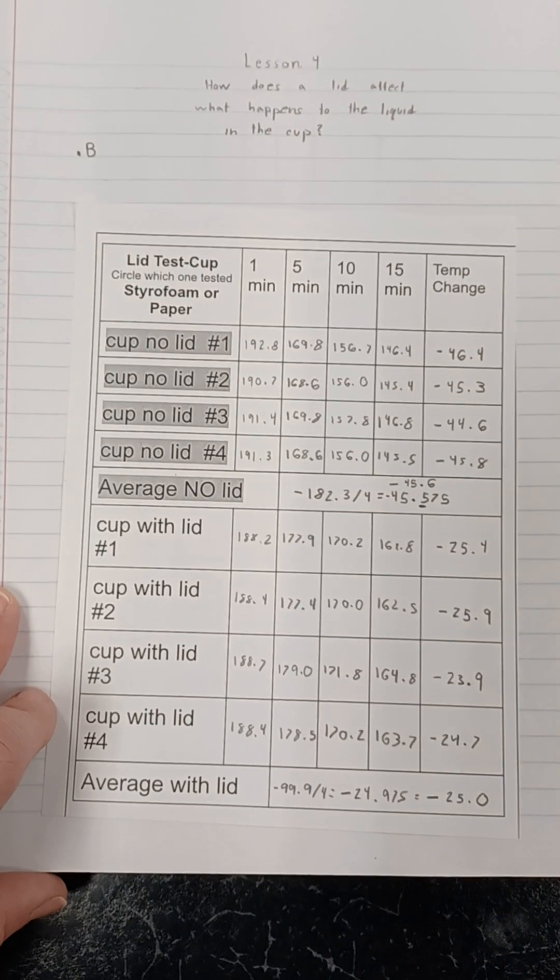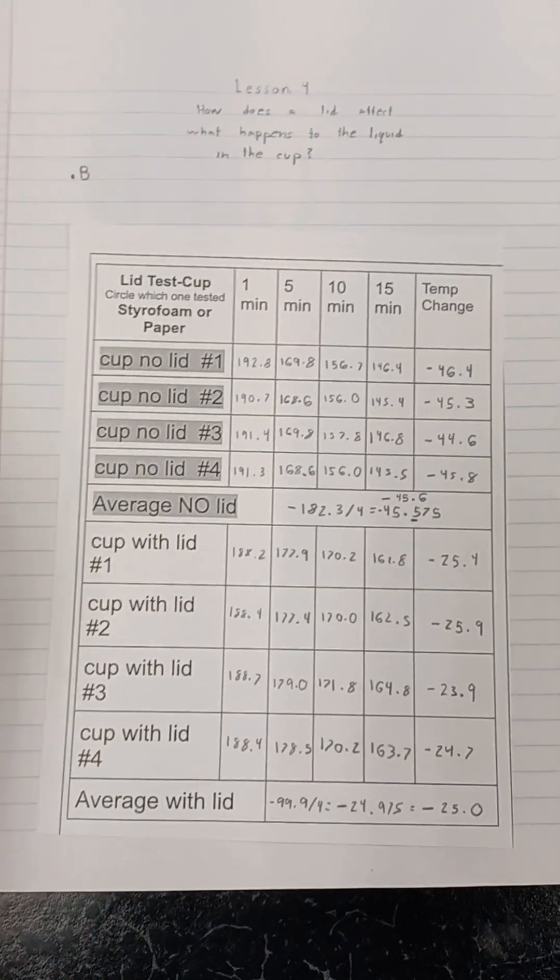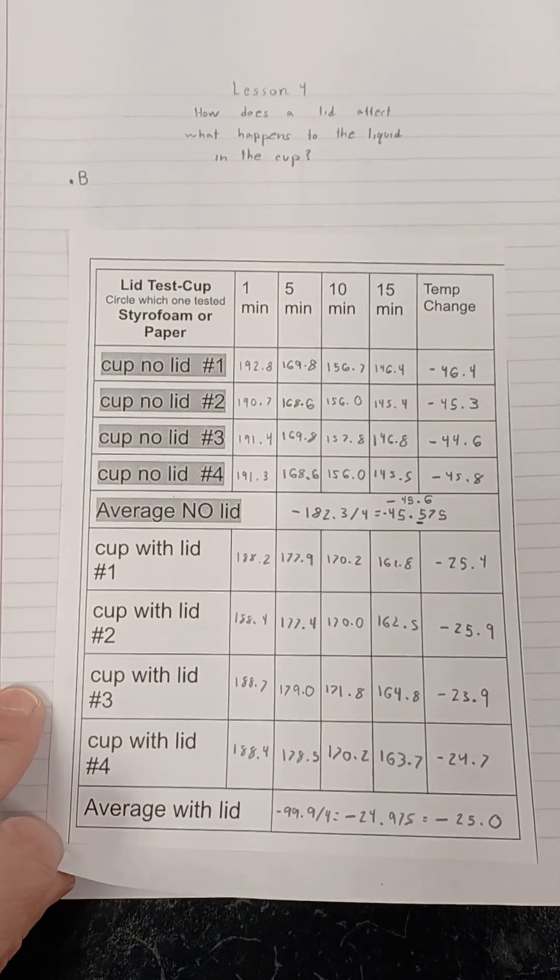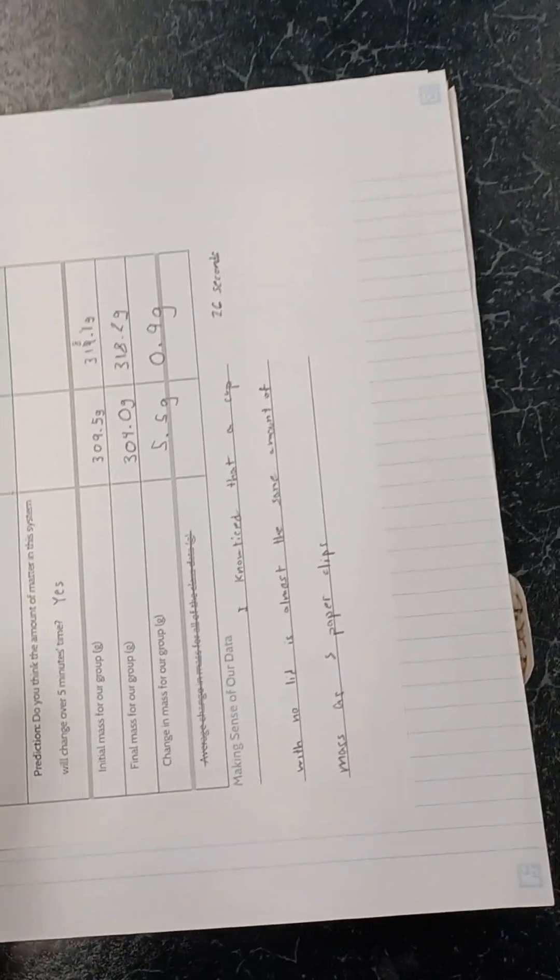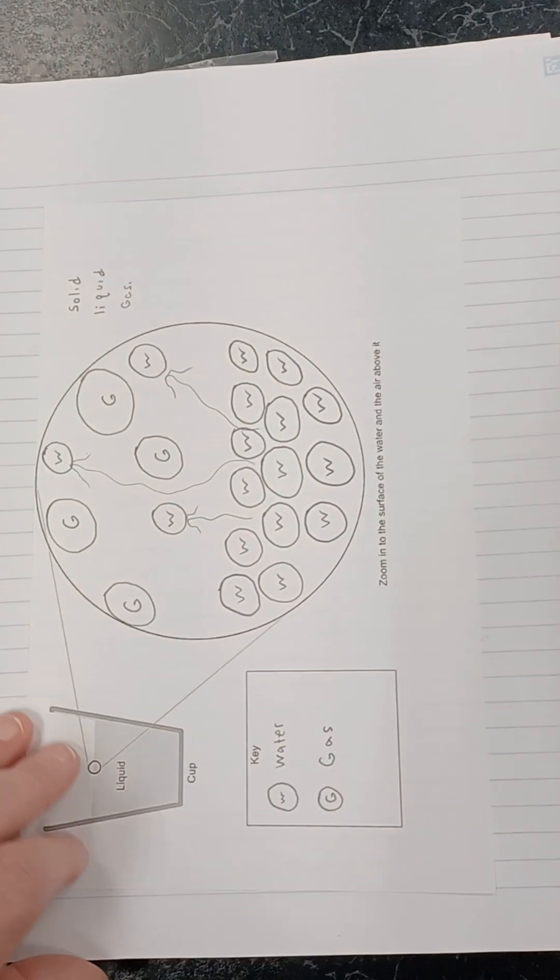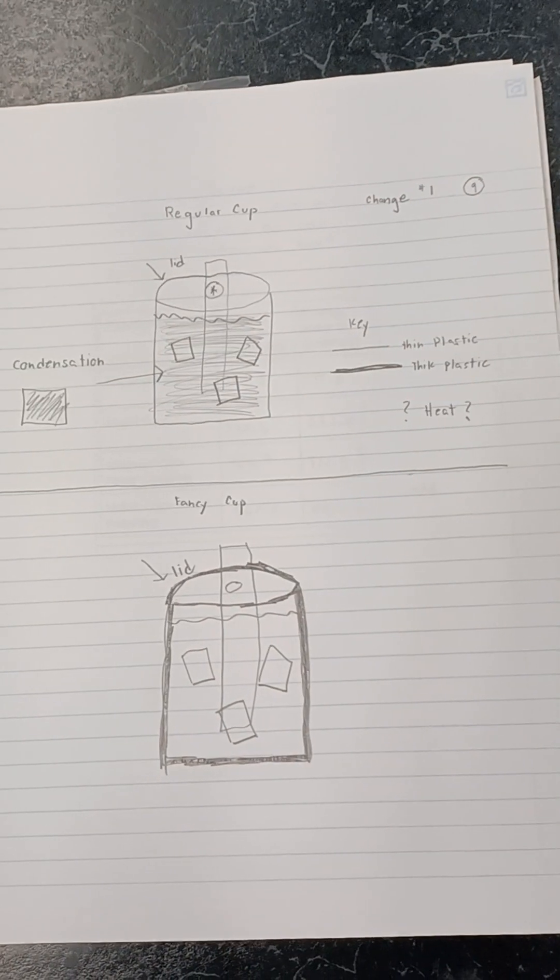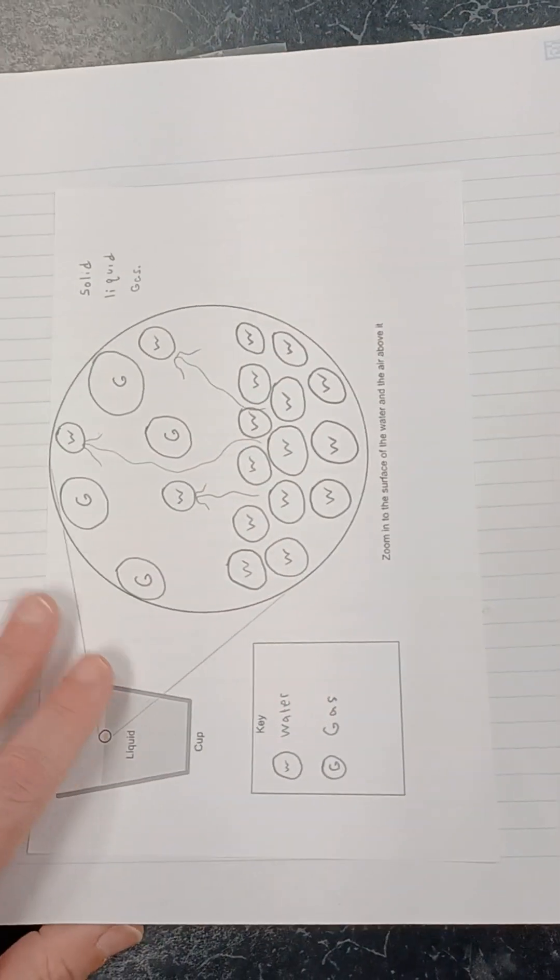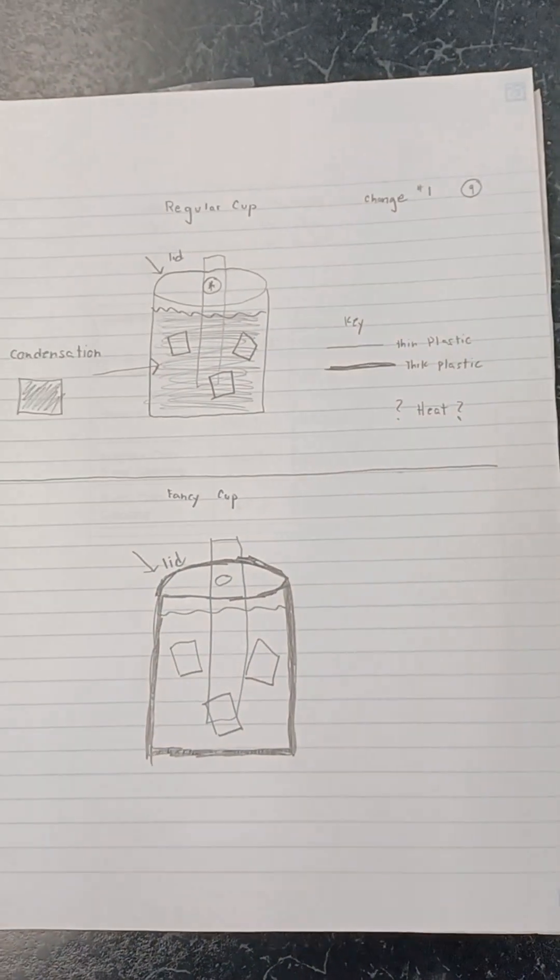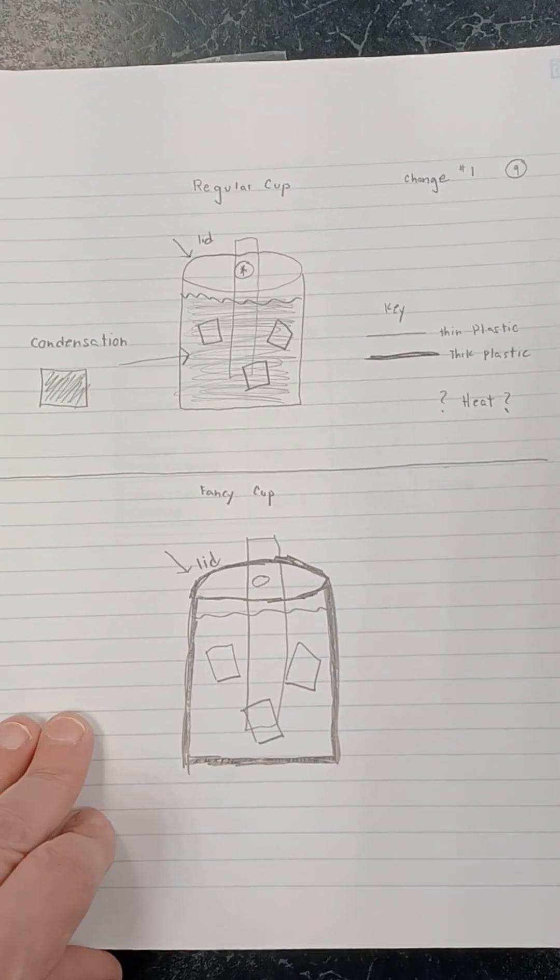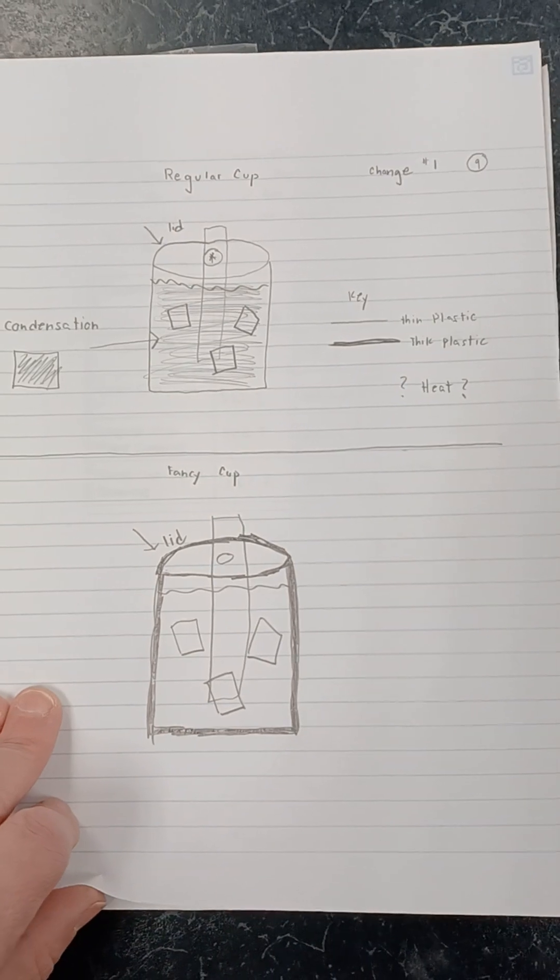In lesson four we explore the lid and no lid and how that works in our functions. Lesson four continues at looking at different models that I had them use from the OpenSciEd material, but I cut out the things I needed. We came up with a new consensus model after some of that learning that we've talked about.